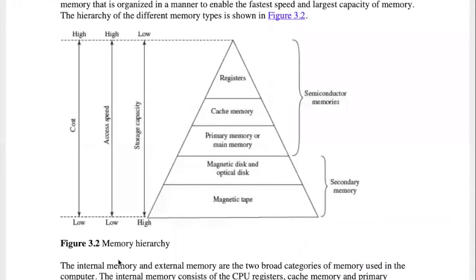We have a temporary memory — temporary storage. We have a register, which is very fast, but we have to use it with the arithmetic logic and control unit. Also, we have to use the cache memory. We have to use RAM and balance CPU speed.